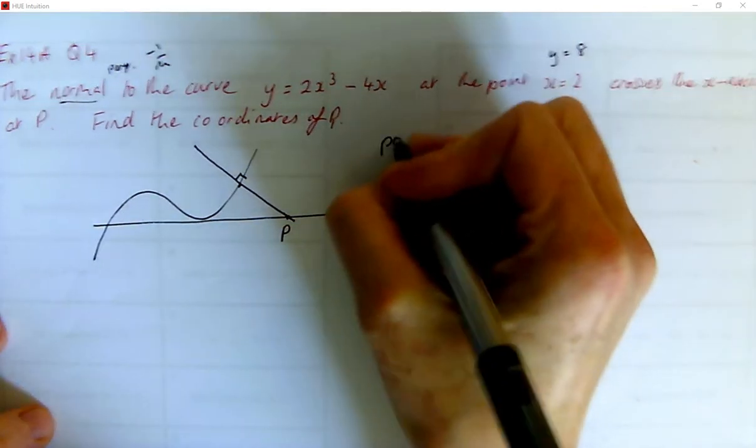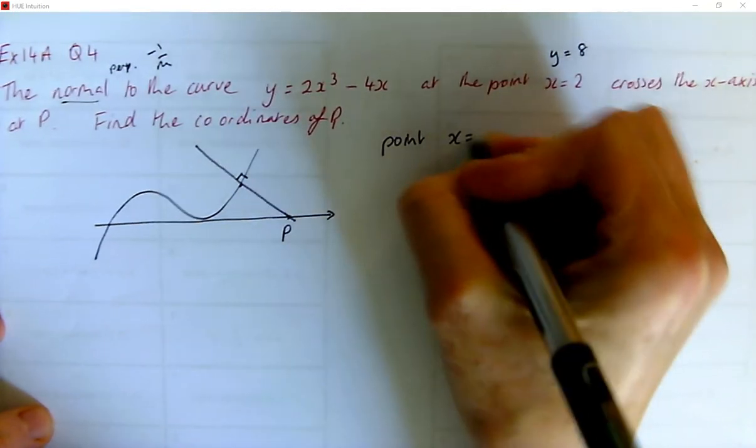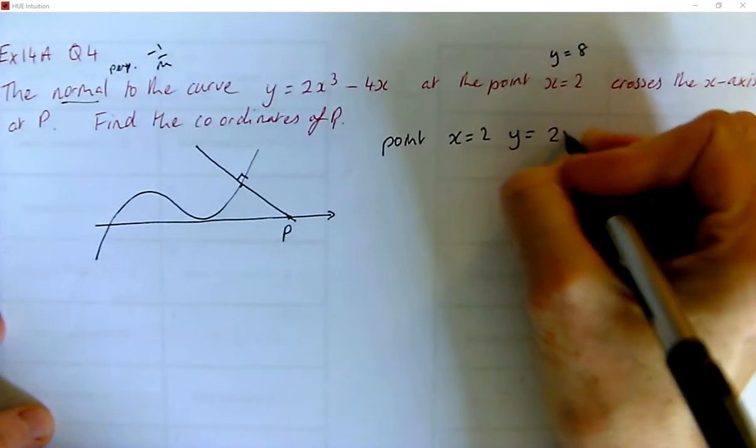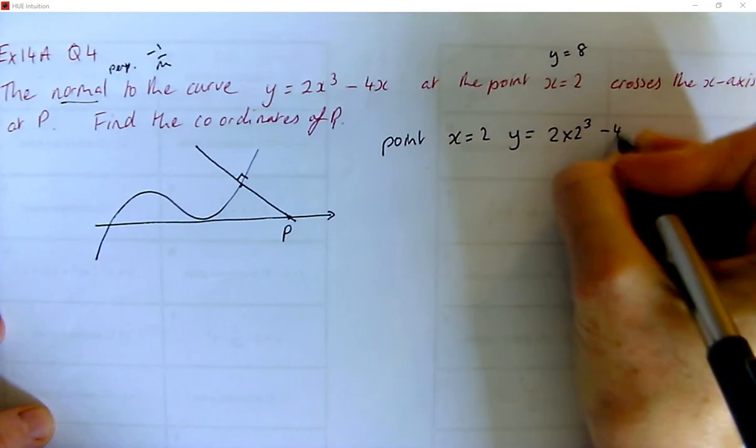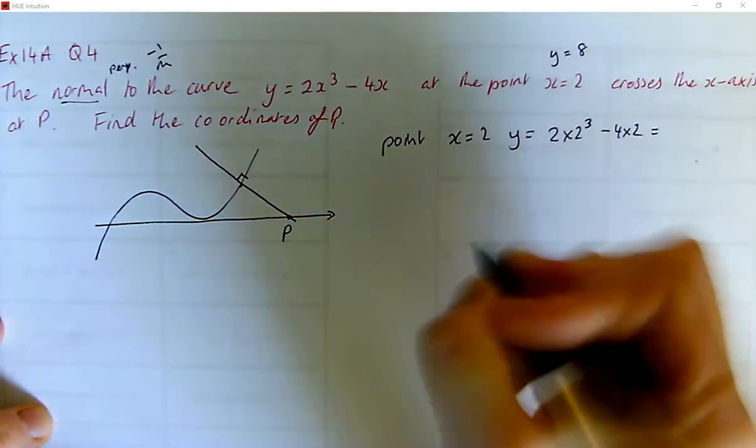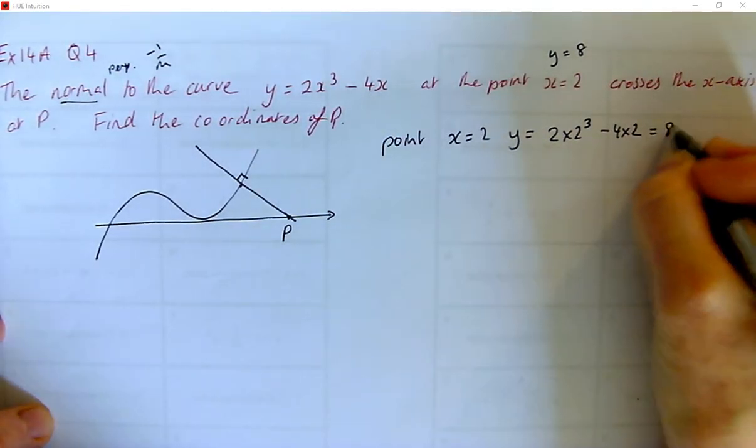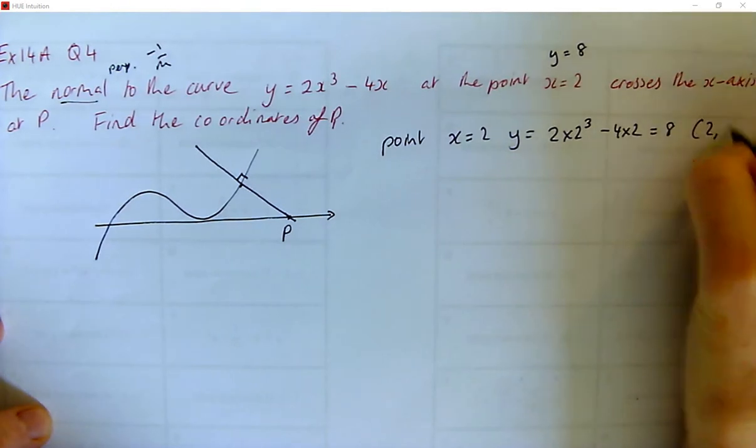So we need a point. So x is 2, y is 2 times 2³ minus 4 times 2, which we've already worked out, is 8. So that's (2, 8).